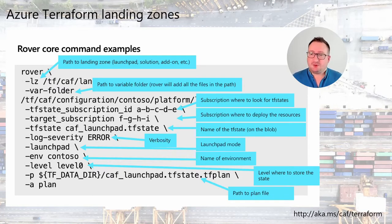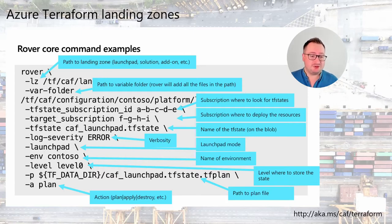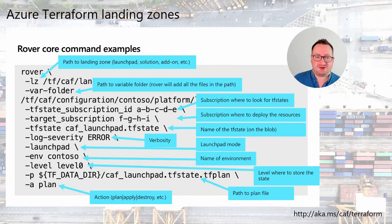You can specify the severity levels, dash launchpad when running for launchpad, and then the environment — for example, Contoso — if you have multiple CAF environments inside a subscription, to target the right TF state. You also specify which level, since there is a set of levels in the CAF framework. Rover will automatically locate the state, connect to it if it already exists and update it, or create it where you specified. You can also specify dash P to store the plan file, and dash A for the action — plan or apply. You can run plan first and then apply on a pre-existing plan, or run dash A apply directly.